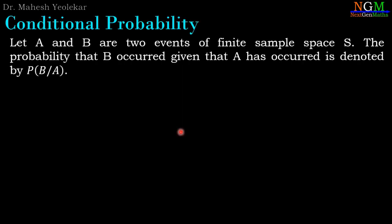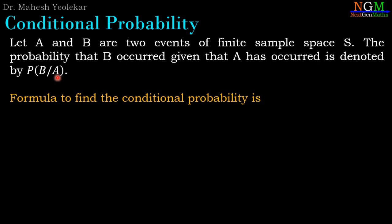Conditional probability: let A and B be two events of a finite sample space. The probability that B occurs given that A has occurred is denoted by P(B|A) — that is, the probability of occurrence of B when A has already occurred. In other words, the probability of B on the condition of the happening of A, hence called conditional probability. The formula is: P(B|A) = P(A∩B) / P(A).